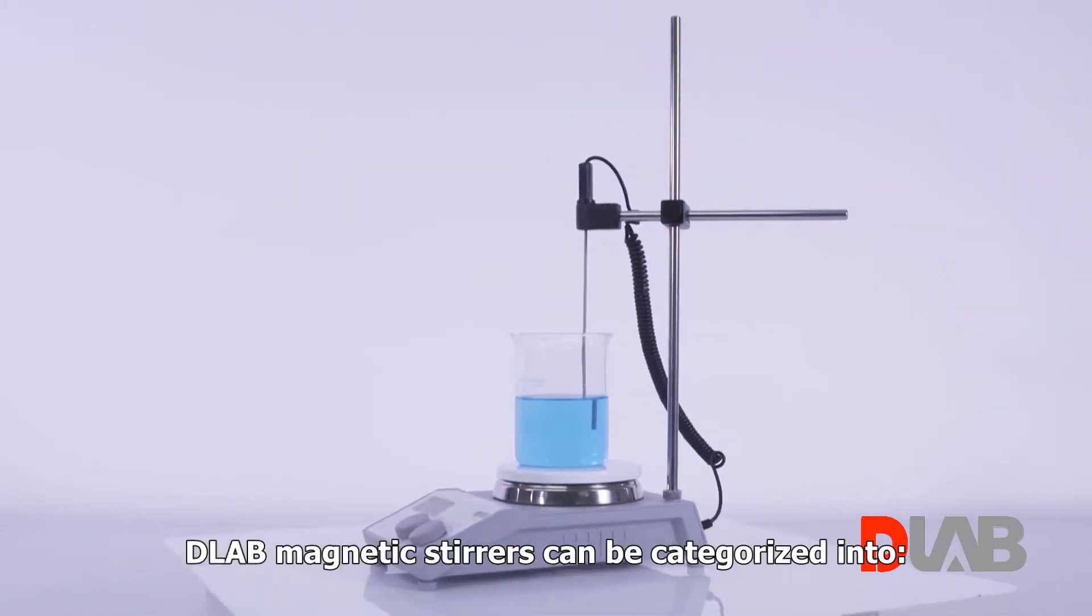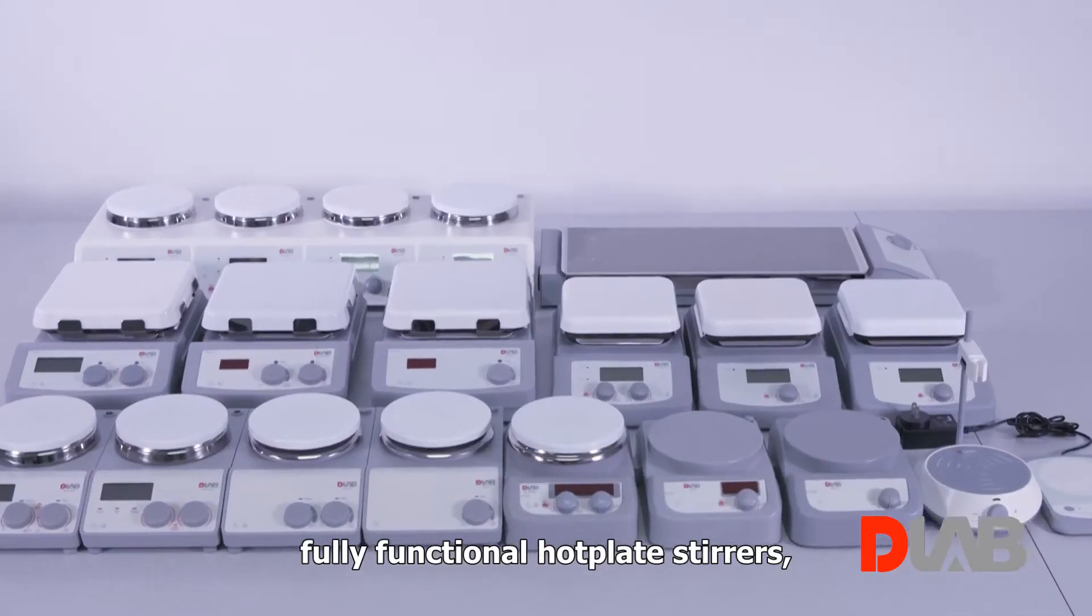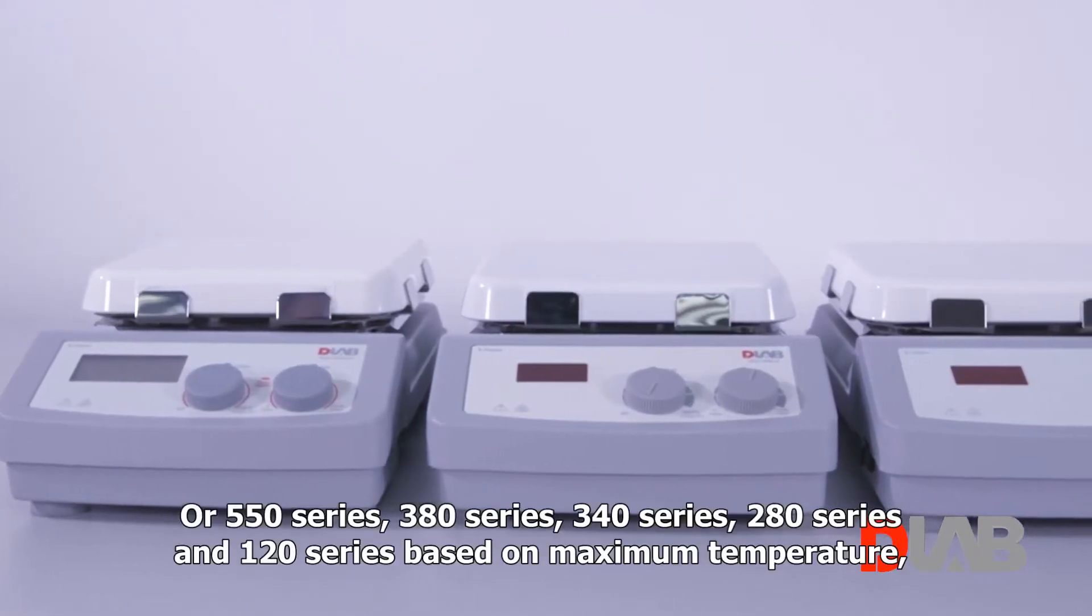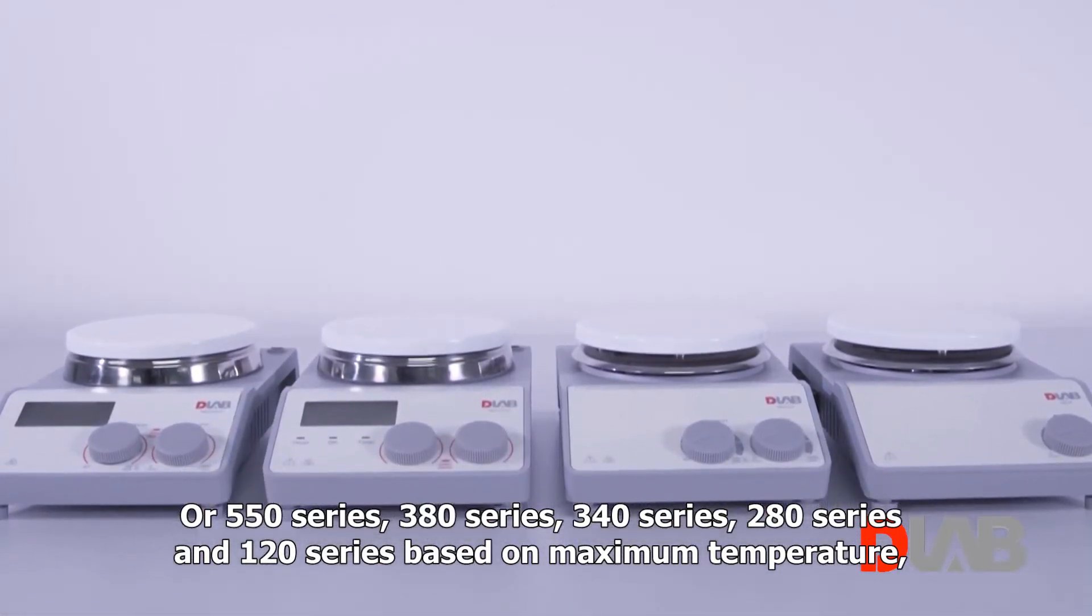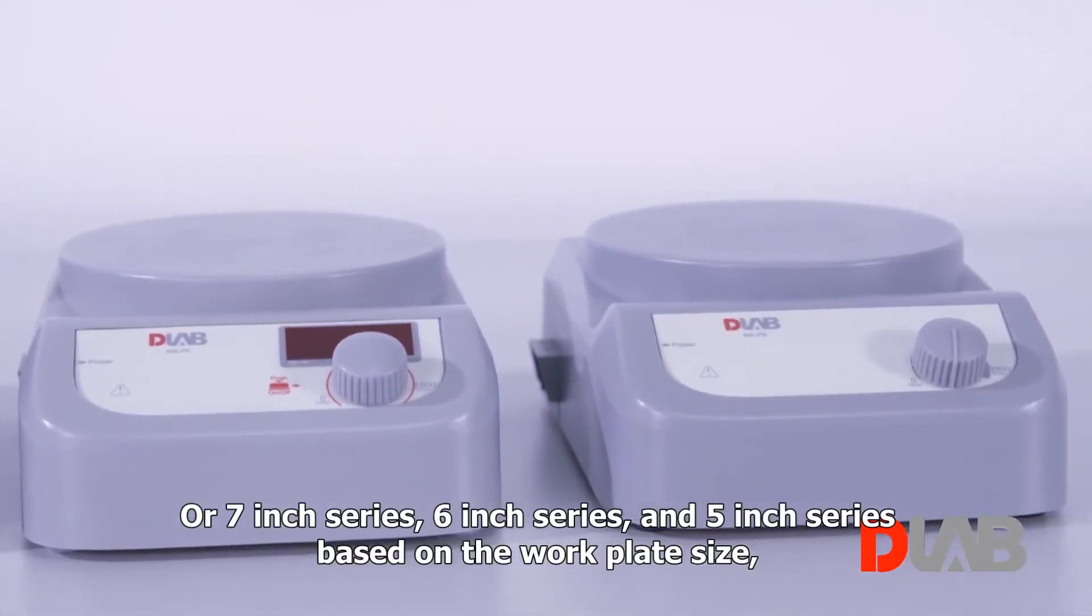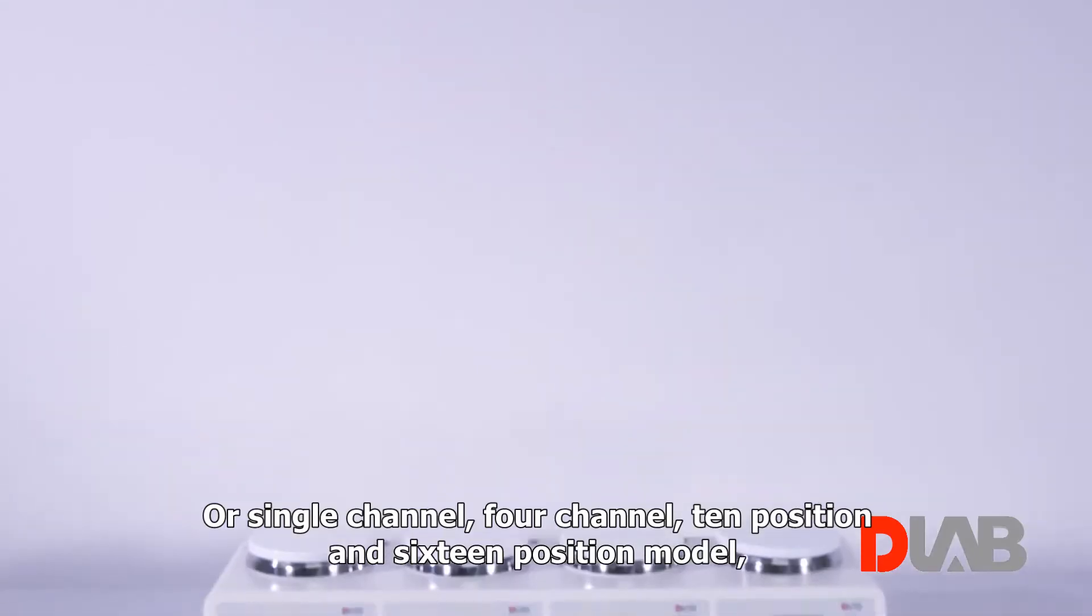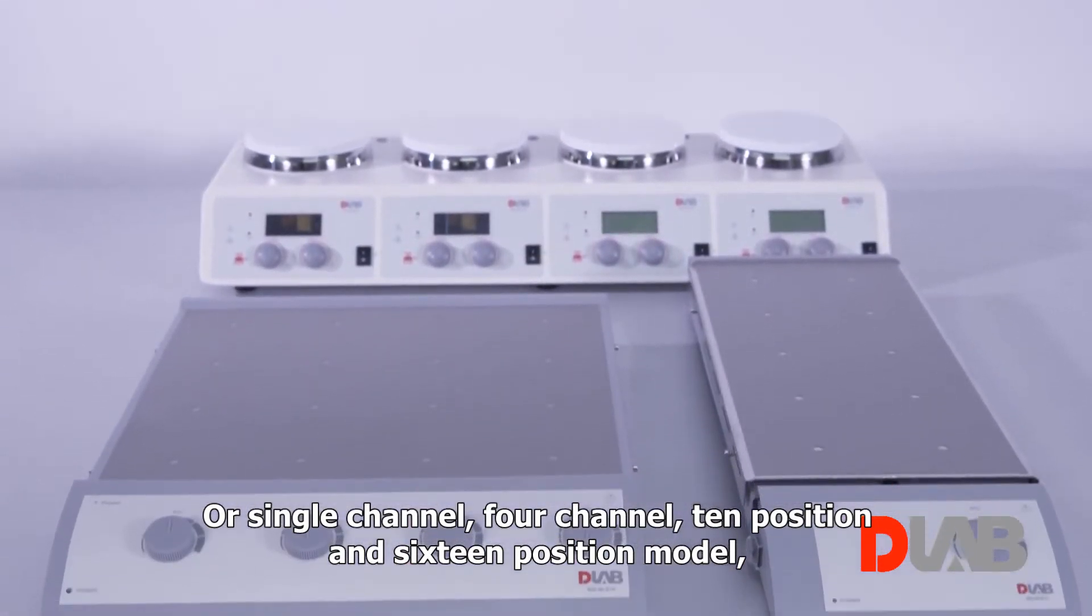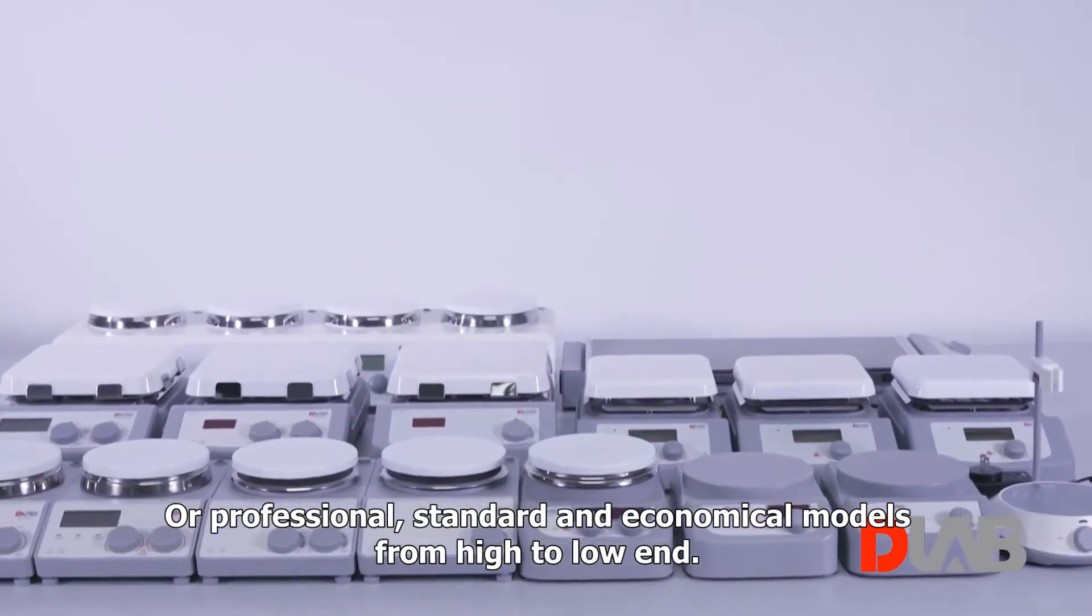D-Lab magnetic stirrers can be categorized into fully functional hot plate stirrers, stirrers, and hot plates, or 550, 380, 340, 280, and 120 series based on maximum temperature, or 7 inch, 6 inch, and 5 inch series based on the work plate size, or single channel, 4 channel, 10 position, and 16 position models, or professional, standard, and economical models from high to low end.